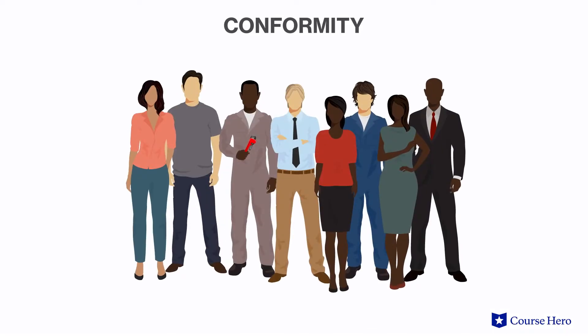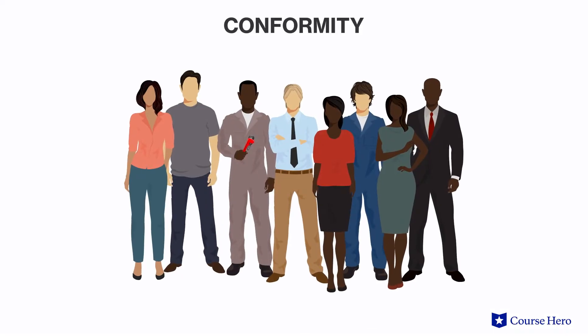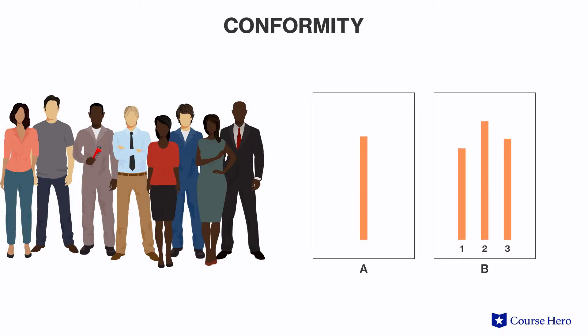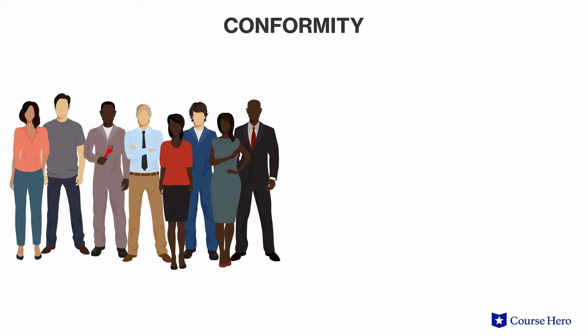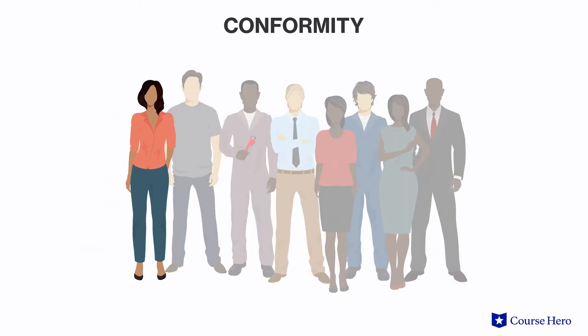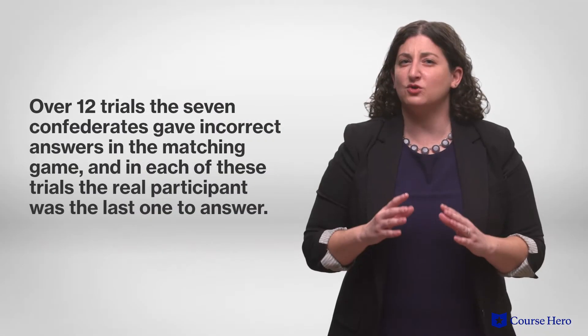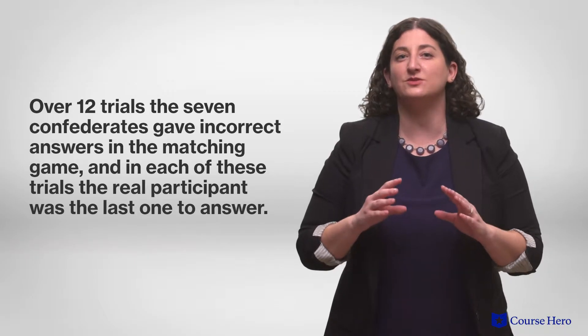Exactly when and why people choose to conform has been a major topic of psychological research. In one famous study called the Asch Conformity Experiments, a group of eight people was asked to identify which line in a set of three matched the line pictured on a separate card. In actuality, there was only one real participant in the study. The other seven were confederates, or fake participants who'd been instructed by the experimenters about how to behave. Over 12 trials, the seven confederates gave incorrect answers in this matching game, and in each of these trials the real participant was the last one to answer.